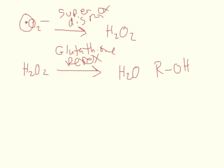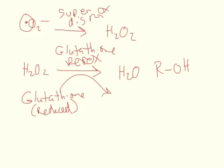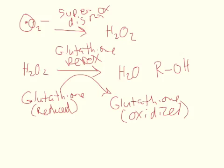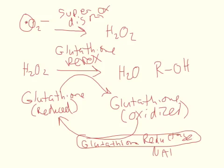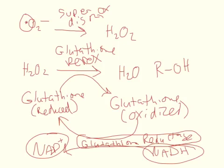In the process, glutathione peroxidase takes reduced glutathione and converts it into oxidized glutathione. Then, to get it back into the reduced state, you use glutathione reductase. The important part is that you take NADPH and convert it into NADP⁺. So you need the reducing equivalents of NADPH created by the pentose phosphate shunt in order to get rid of these superoxides.